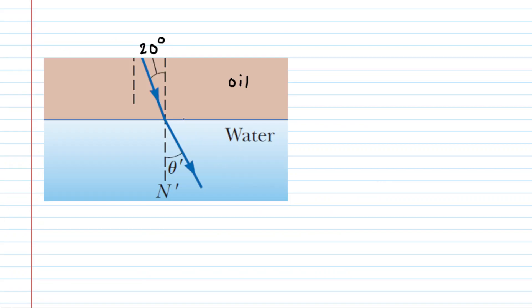In this case, the interface is that between oil and water. We will go ahead and set up another Snell's Law calculation. Once again, we have used subscripts for oil and water, the respective media through which the light is traveling.